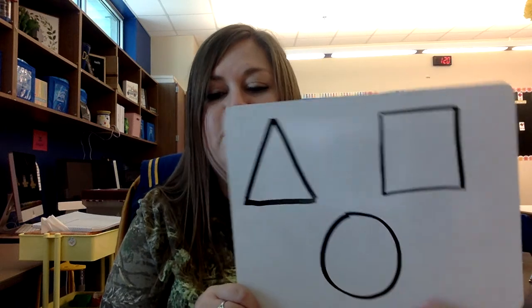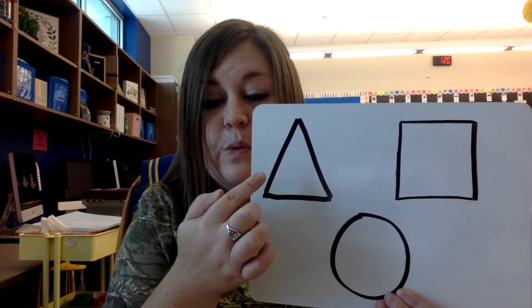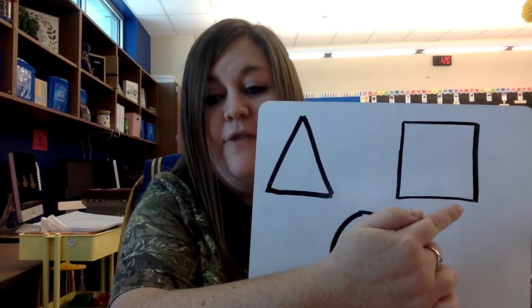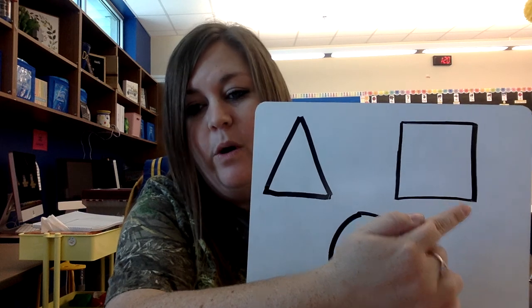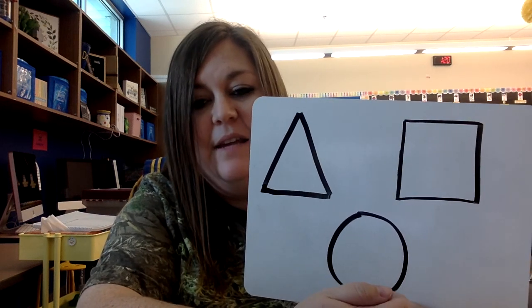So we've learned about three different 2D shapes. We learned about a triangle that has three sides and three corners. We learned about a square that has four equal sides that are all the same and four corners. And then we learned about a circle that has zero sides and zero corners.